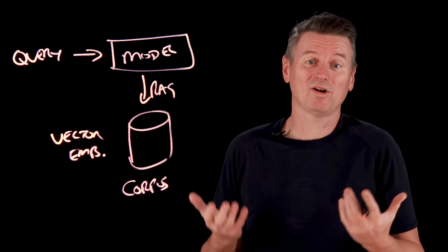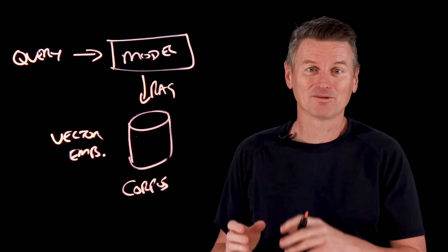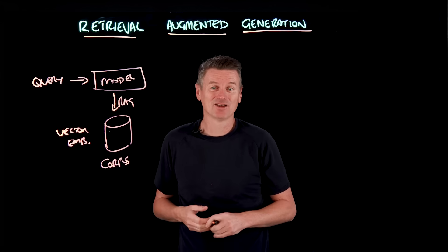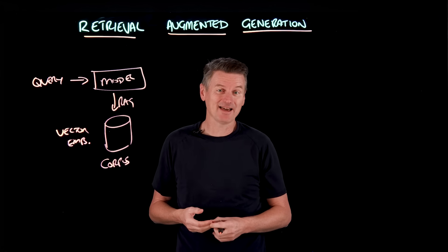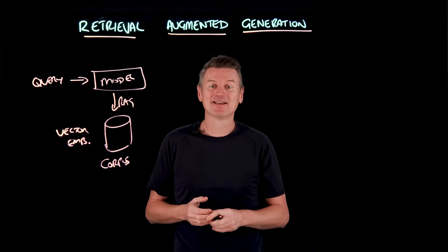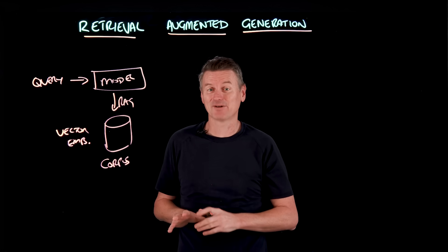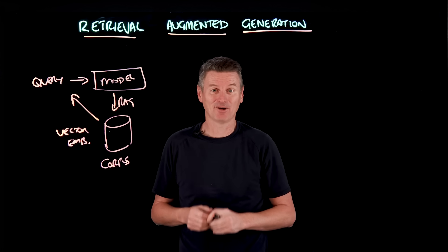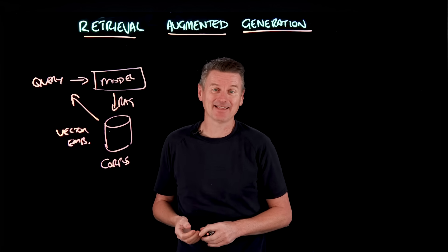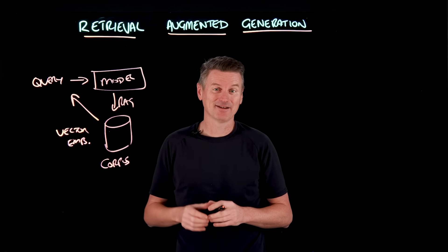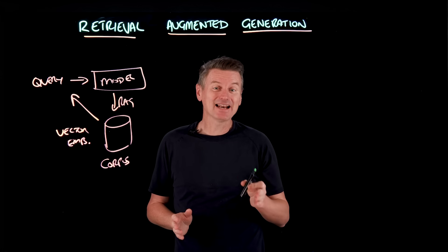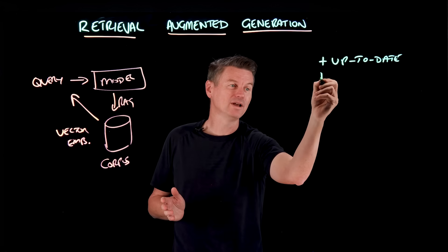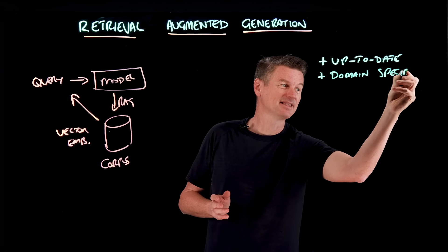So when you ask a query like, what was our company's revenue growth last quarter? RAG will find documents that are mathematically similar in meaning to your question, even if they don't use the exact same words. So it might find documents mentioning fourth quarter performance or quarterly sales. Those don't contain the keyword revenue growth, but they are semantically similar. Once RAG finds the relevant information, it adds this information back into your original query before passing it to the language model. So instead of the model just guessing based on its training data, it can now generate a response that incorporates your actual facts and figures. This makes RAG particularly valuable when you are looking for information that is up to date and also very valuable when you need to add in information that is domain specific as well.